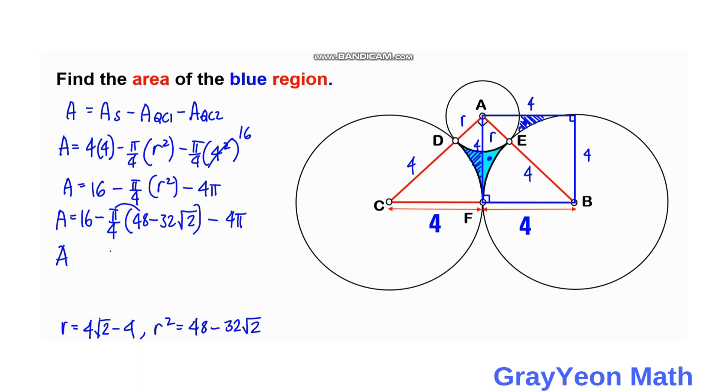Let's write 16 first. So 16 minus 12π plus 32 divided by 4 is 8, so 8√2π minus this 4π.